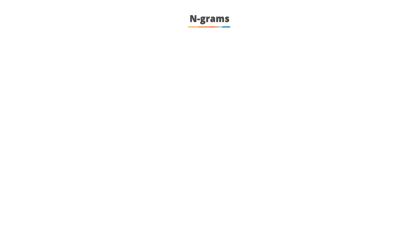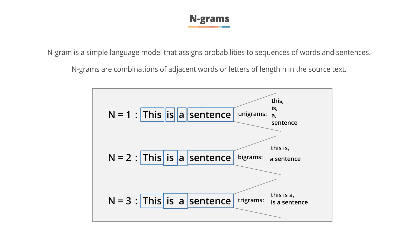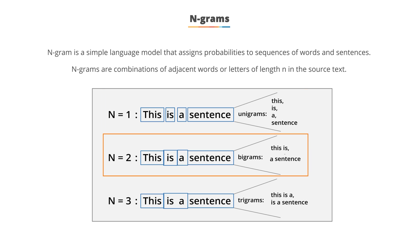N-grams: an n-gram is the simplest model that assigns probabilities to sequences of words or sentences. N-grams are combinations of adjacent words or letters of length n in the source text. For example, individual words are unigrams. A two-gram or bigram is a two-word sequence like 'this is' or 'is a'. A three-gram or trigram is a three-word sequence like 'this is a' or 'is a sentence'.